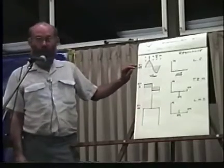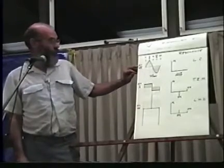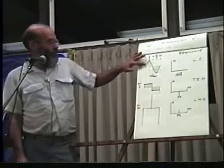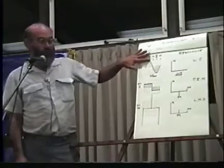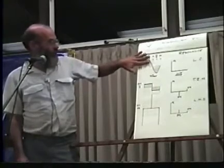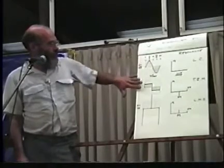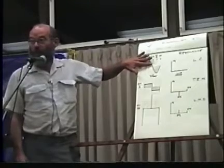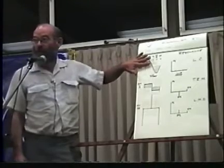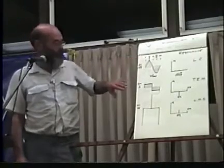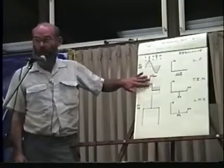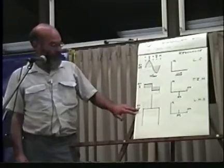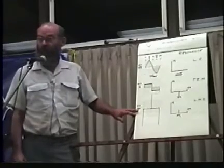Now with the sine wave, the amplitude is the square root of two higher — rather than one, it would be square root of two higher because of the peak-to-average ratio. With the rectangular wave it would be one. With the impulses, it's infinity.